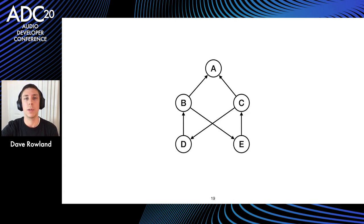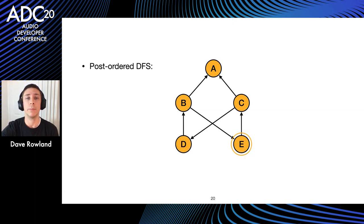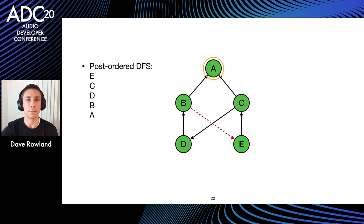Now consider a slightly more complex directed graph that contains a feedback loop — called a cycle in graph theory. If we try our traversal naively, we enter an infinite loop. To break this, we remember the state of each node as we visit it and never cross a node we're already visiting. Coloring nodes orange to indicate they're being visited, we traverse A, B, D, C, E — and then can't traverse from E back to B because it's already being visited.